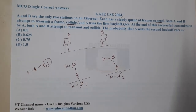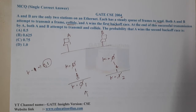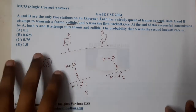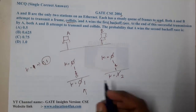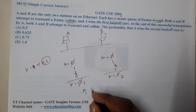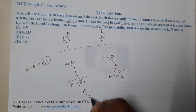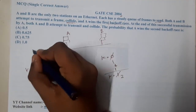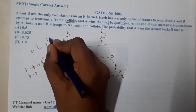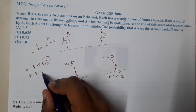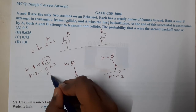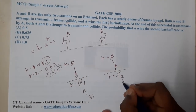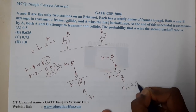The question asks: what is the probability that A wins the backoff race this time? This is an interesting type of question solvable in various ways. When k equals one the options are zero or one; when k equals two the options are zero to 2^k minus one, which is zero to three — that is zero, one, two, and three.